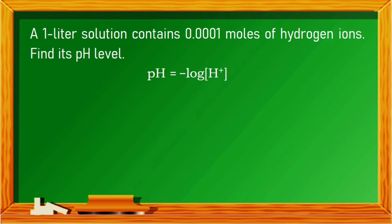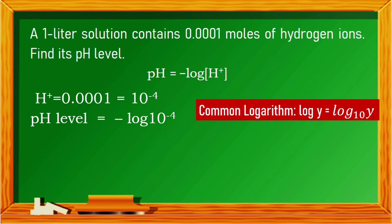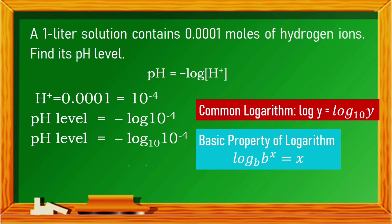Let us use the formula. We convert the given 0.0001 to scientific notation, which is equivalent to 10 raised to the power of negative 4 — we move the decimal point four places. Substituting into the formula: pH equals negative log of 10 raised to the power of negative 4. Since there is no written base, this is a common logarithm with base 10. By the basic property of logarithm, log base 10 of 10 raised to the power of negative 4 equals negative 4. Negative times negative 4 is positive 4. Therefore, the pH level of a solution containing 0.0001 moles of hydrogen ions is 4.